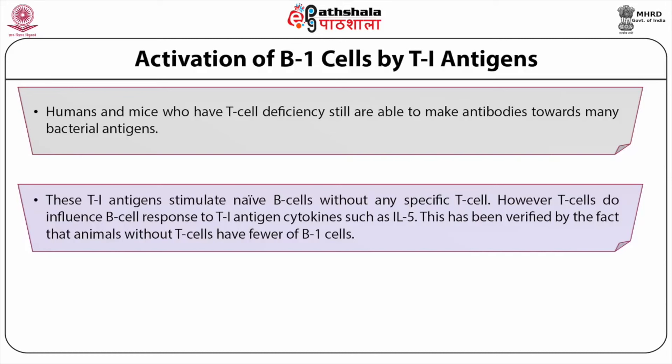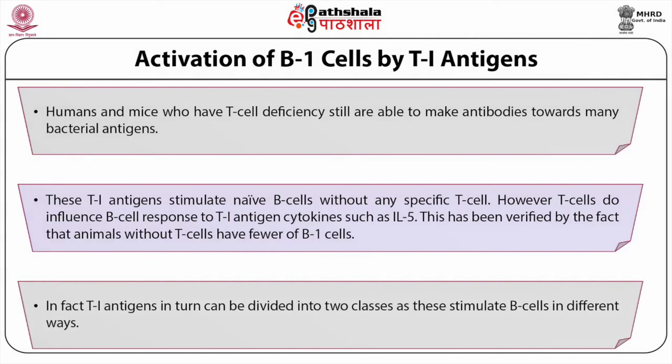Humans and mice with T cell deficiency are still able to make antibodies towards many bacterial antigens. Ti antigens stimulate live B cells without any specific T cell. However, T cells do influence B cell response to Ti antigens through cytokines such as IL-5, as verified by the fact that animals without T cells have fewer B1 cells. Ti antigens in turn can be divided into two classes, as they stimulate B cells in different ways. These antigens do not select any clones — their effect on B cells is rather non-specific, called polyclonal activation.